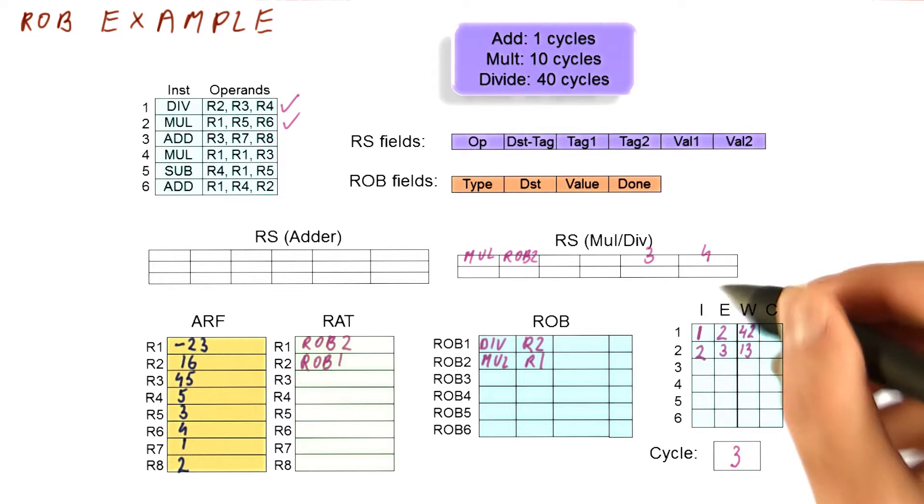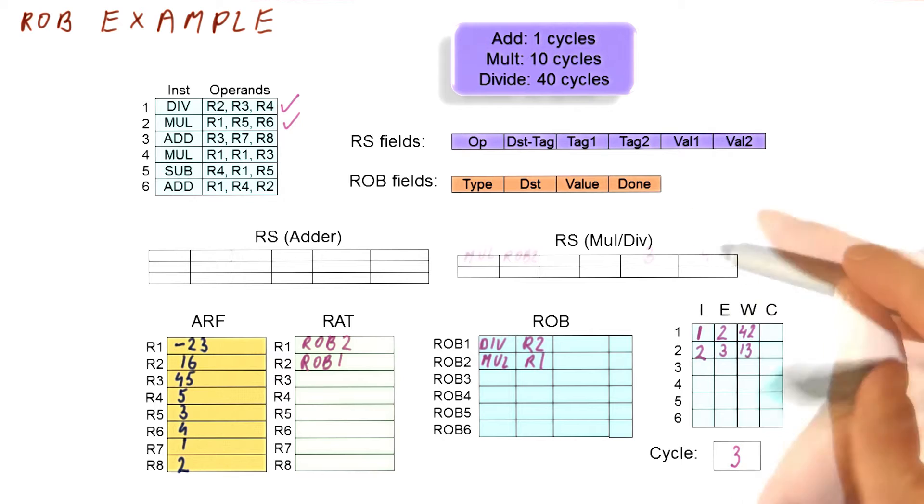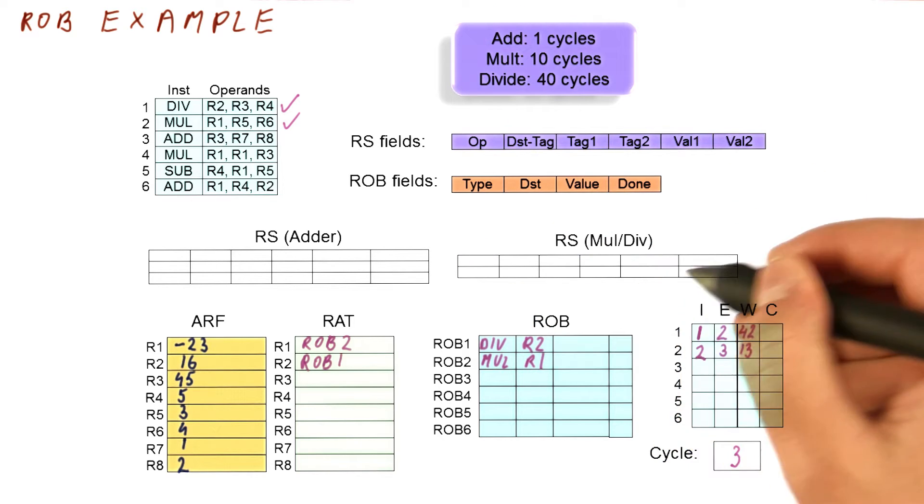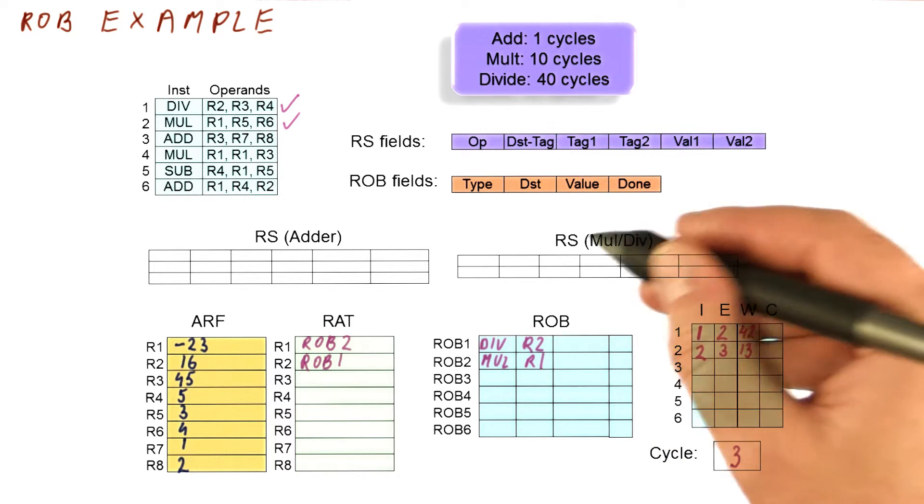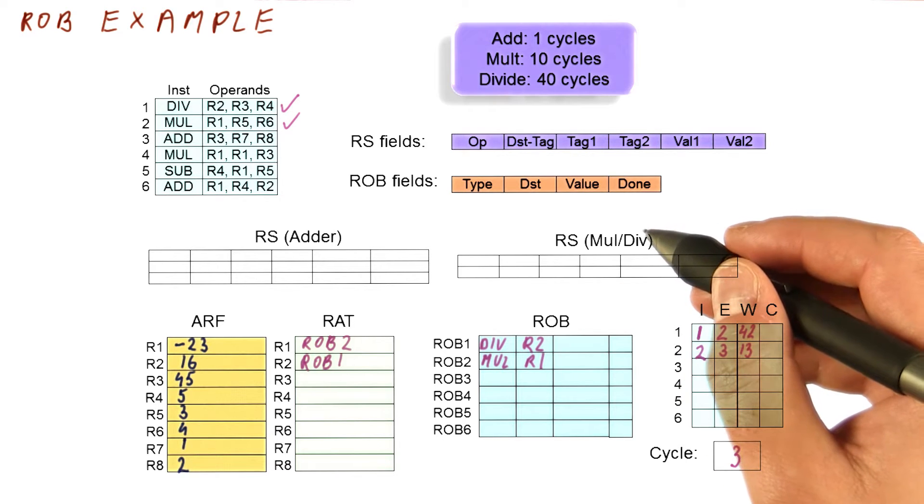As we go to cycle three, again, we can free this reservation station. The instruction has been dispatched. So in cycle three, we have this reservation station free again. Don't forget to do that because you might run out of reservation stations prematurely otherwise.